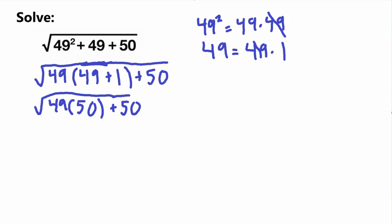So now, once again, we're in a similar situation where we can factor out. Since both of these terms are being added, 49 times 50 plus 50, both of these terms have a factor of 50 inside of them. So it means we can factor out the 50.